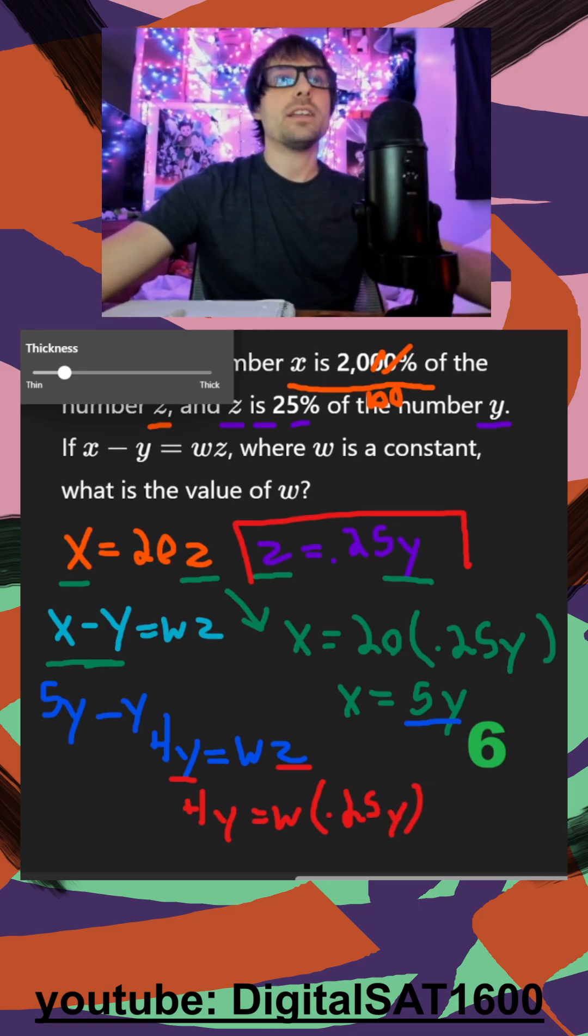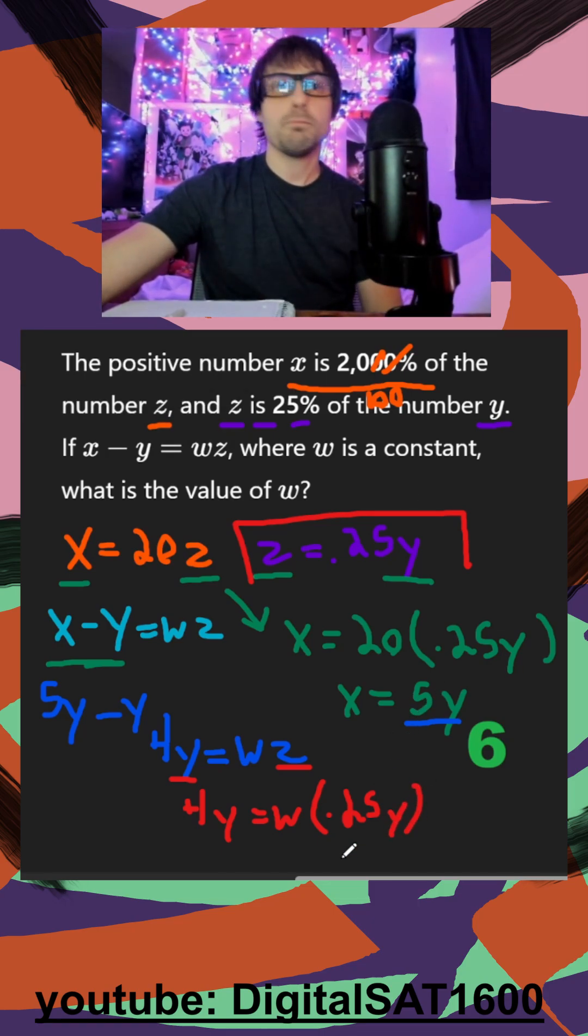And then finally, if I divide both sides by 0.25y, that gets rid of this. My y's cancel out, and then 4 divided by 0.25, throw it in decimals, you should get w is equal to 16. Now I'm out.